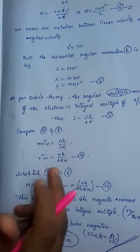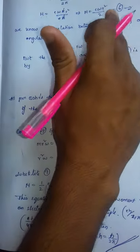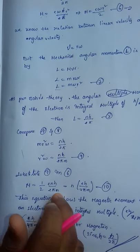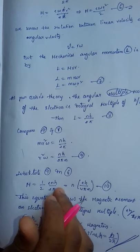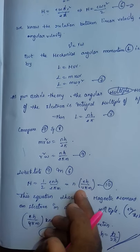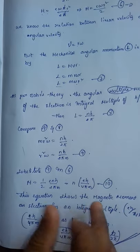Now substitute the ninth equation in the sixth. We get M equals to 1 by 2, E times n h by 2π M, which can be written as n times E h by 4π M. This is the ninth equation.